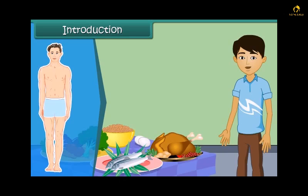We get our food from both plants and animals. Food has to be produced on a large scale to meet everyone's requirements. In this module, we will discuss crop production and its management for the distribution of food.